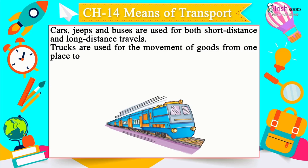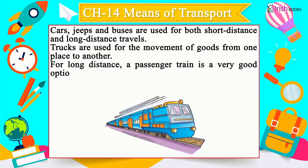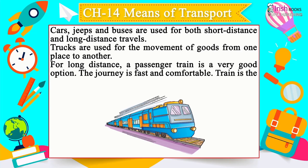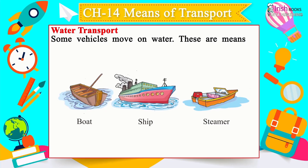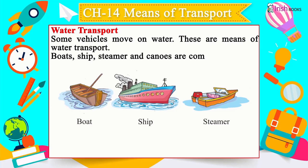Cars, jeeps and buses are used for both short and long distance travel. Trucks move goods from one place to another. A passenger train is a very good option for long distances — the journey is fast and comfortable, and the train is the fastest means of land transport. Water transport includes boats, ships, steamers and canoes.